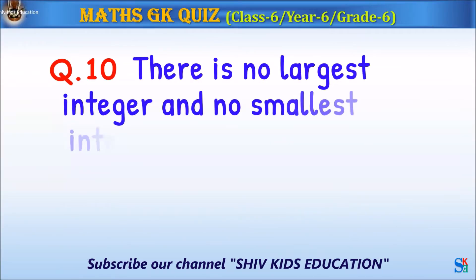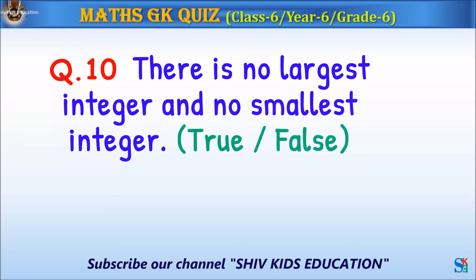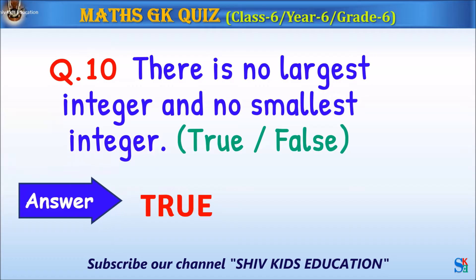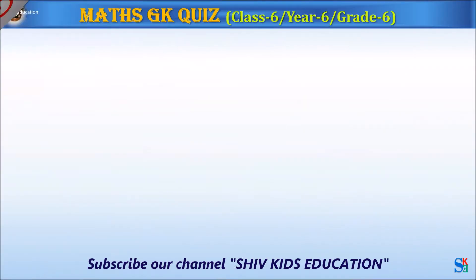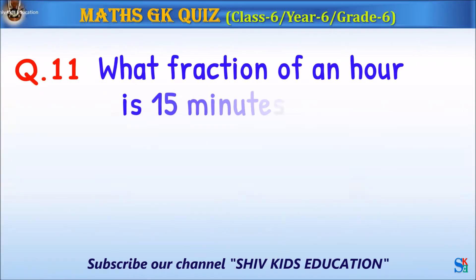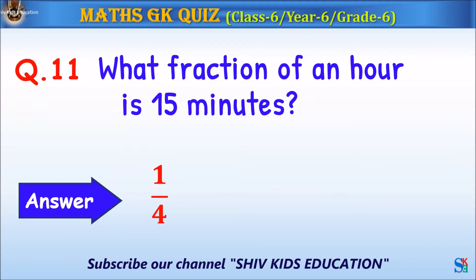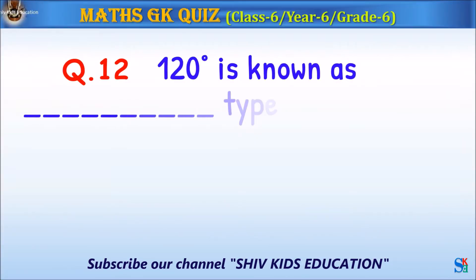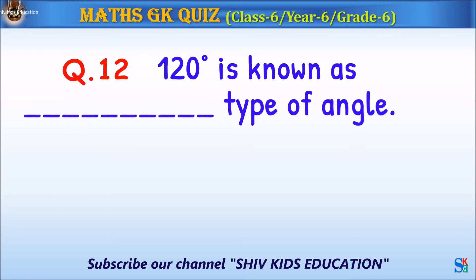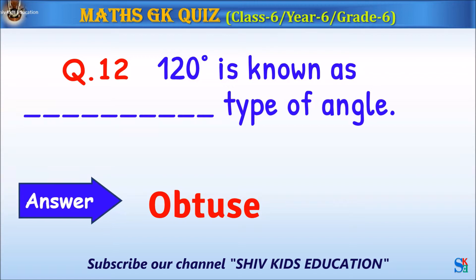Question 10: There is no largest integer and no smallest integer — true or false? The answer is true. Question 11: What fraction of an hour is 15 minutes? The answer is one quarter. Question 12: 120 degrees is known as what type of angle? The answer is obtuse.